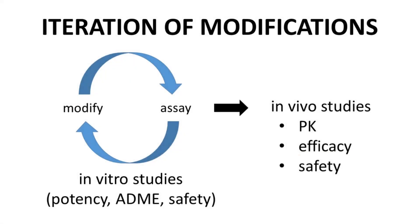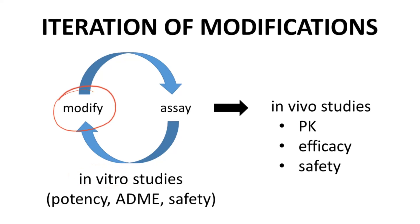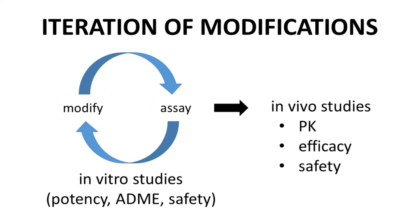A typical optimization program relies initially on in vitro studies. New analogs within a lead series are prepared and tested rapidly in in vitro assays that monitor potency, ADME properties, and safety.